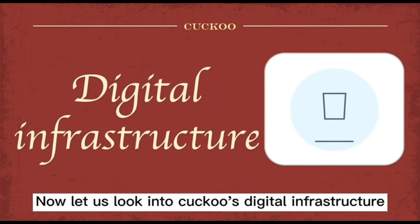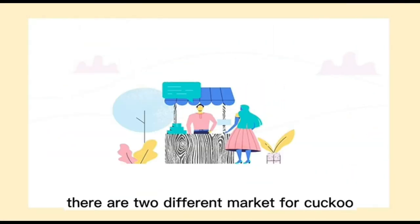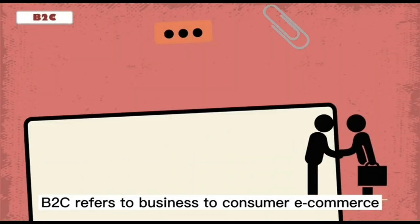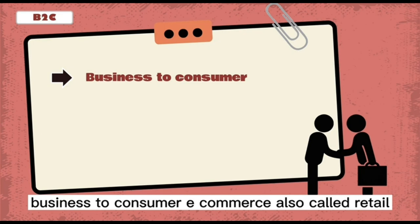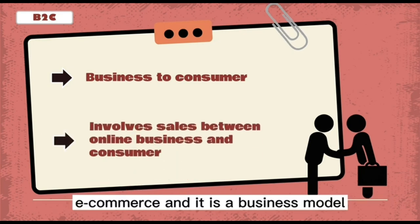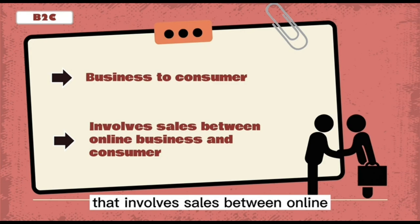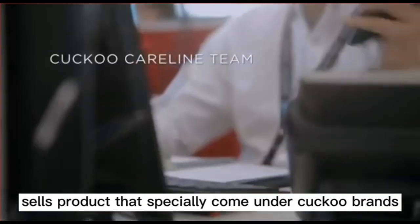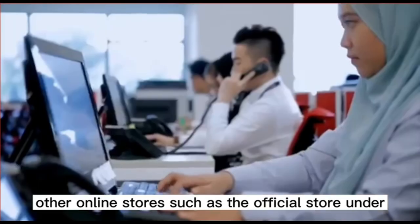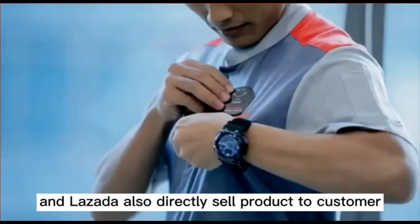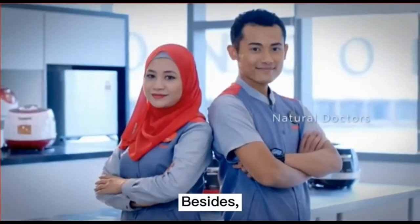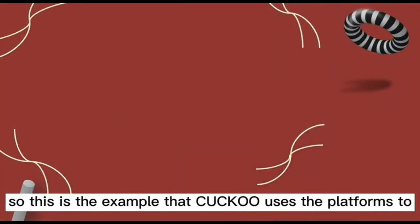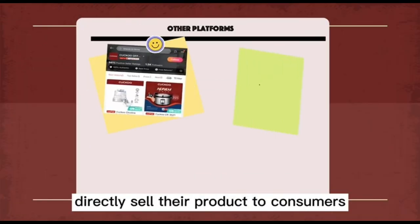Now let us look into Kuku's digital infrastructure. There are two different markets for Kuku: B2C and C2B. B2C refers to Business-to-Consumer e-commerce, also called retail e-commerce — a business model that involves sales between online businesses and consumers. For example, Kuku's online store sells products under the Kuku brand, and official stores under Shopee and Lazada also directly sell products to customers. Each Kuku outlet also has its own online platform to directly sell products to customers.